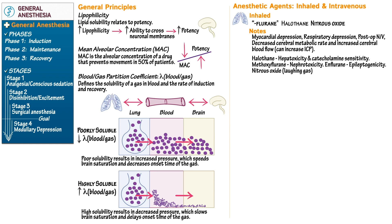Nitrous oxide (N₂O), often referred to as laughing gas because it produces mild euphoria, is a great review of general principles. Of the inhaled agents, it has the highest MAC and therefore the lowest potency, and it has fast onset due to a low blood-gas partition coefficient. It produces marked analgesia and amnesia, and has the smallest effect on blood pressure reduction and respiratory depression. From a toxicity standpoint, prolonged exposure can inhibit vitamin B12 and produce spinal cord degeneration called subacute combined degeneration — damage to the dorsal columns of the spinal cord.